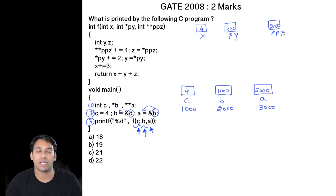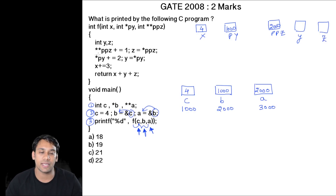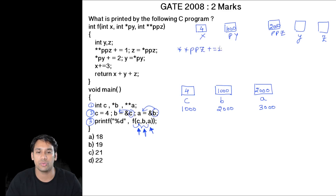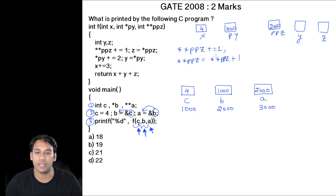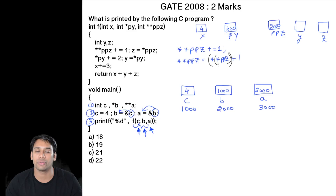Now in this function, we also have two more variables: y and z. The first statement is **ppz += 1, which can be written as **ppz = **ppz + 1. Here we are using two stars. That means whatever address is stored in ppz, we do star of that, and whatever value we get after that, we do star of that again.